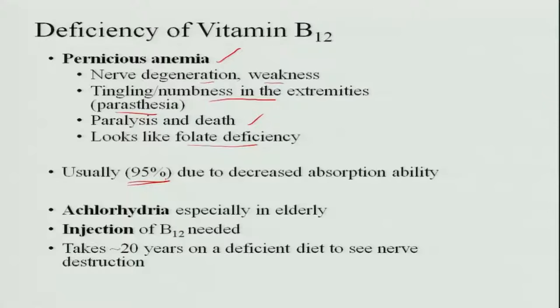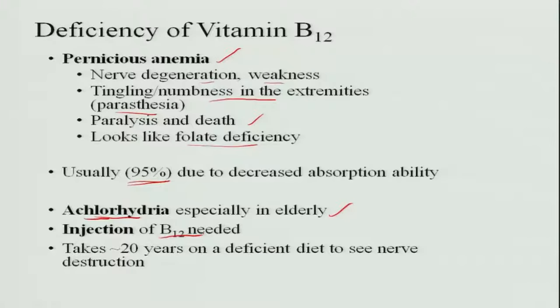95 percent of the deficiency is because of the deficiency of the intrinsic factor where absorption does not occur. Achlorhydria is when gastric acid is not produced in the stomach. B12 requires an acidic medium for absorption, so when no gastric acid is produced, this also causes B12 deficiency, which is generally seen in elderly people. In such cases, the only way to get vitamin B12 into the body is through intravenous injections.